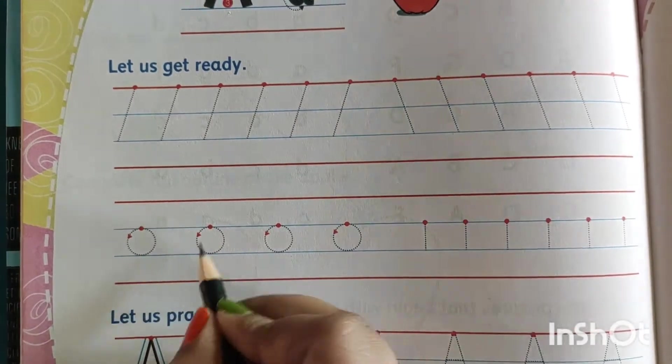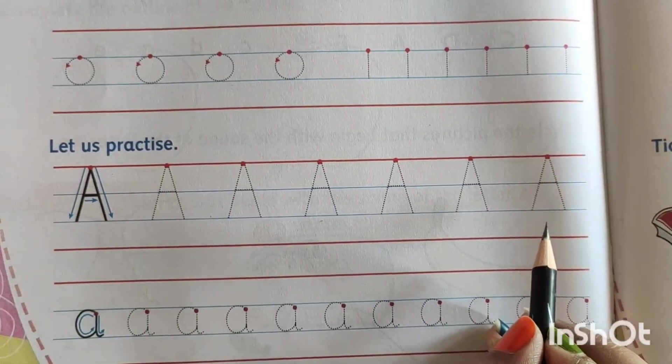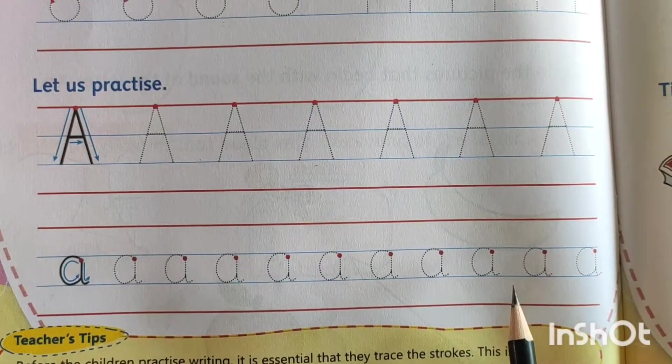Then after circle, standing line. Then we will go for capital A and small a.